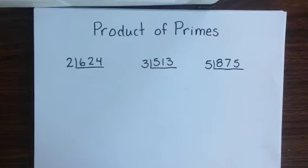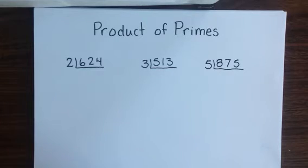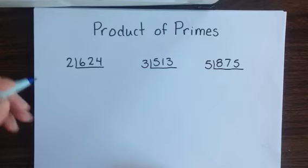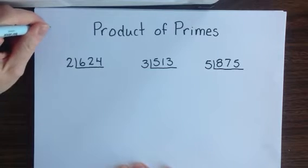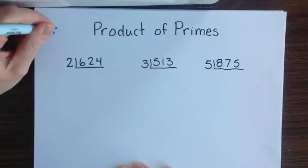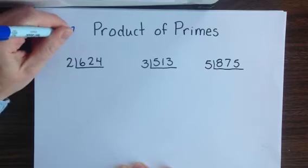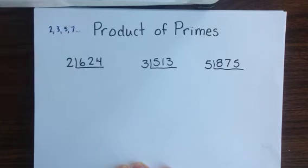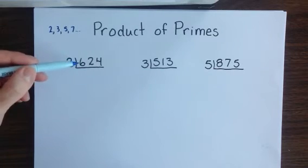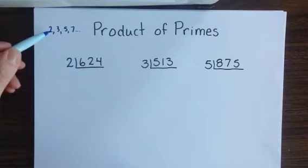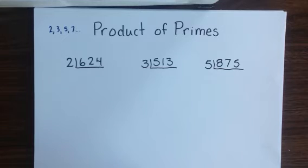The first part of these problems are already entered for you on your note packet. We're going to be using the divisibility rules that we've learned for the digits 2, 3, 5, and 7 to divide these larger numbers by those numbers until it's not possible to do so anymore.